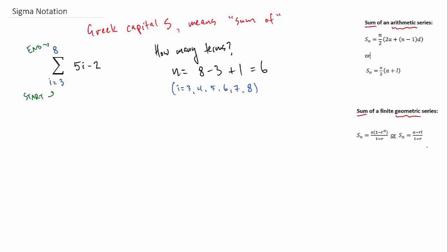So first of all, 8 minus 3 plus 1. What we're doing is you're basically counting from 3 to 8, which is 3, 4, 5, 6, 7, 8, that's a total of 6 terms. The reason you have to add 1 is that you're including the 3. 8 minus 3 is 5, but you add 1.